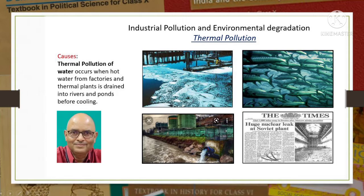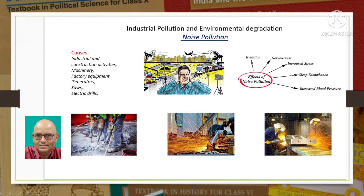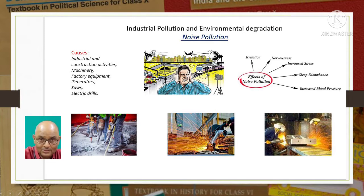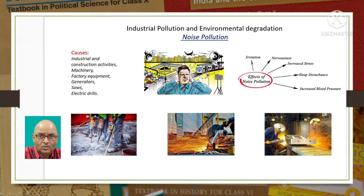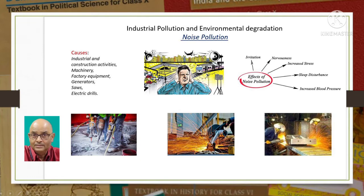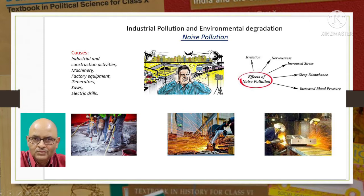Next is noise pollution - it occurs in the form of unwanted loud noise. Industrial and construction activities, machinery, factory equipment, generators, saws and pneumatic and electric drills are the sources of noise pollution. They produce intolerable sound. Industrial towns that are close to residential areas cause discomfort to residents. Noise results in irritation and anger, can damage hearing ability, and is responsible for increased heartbeat and blood pressure.